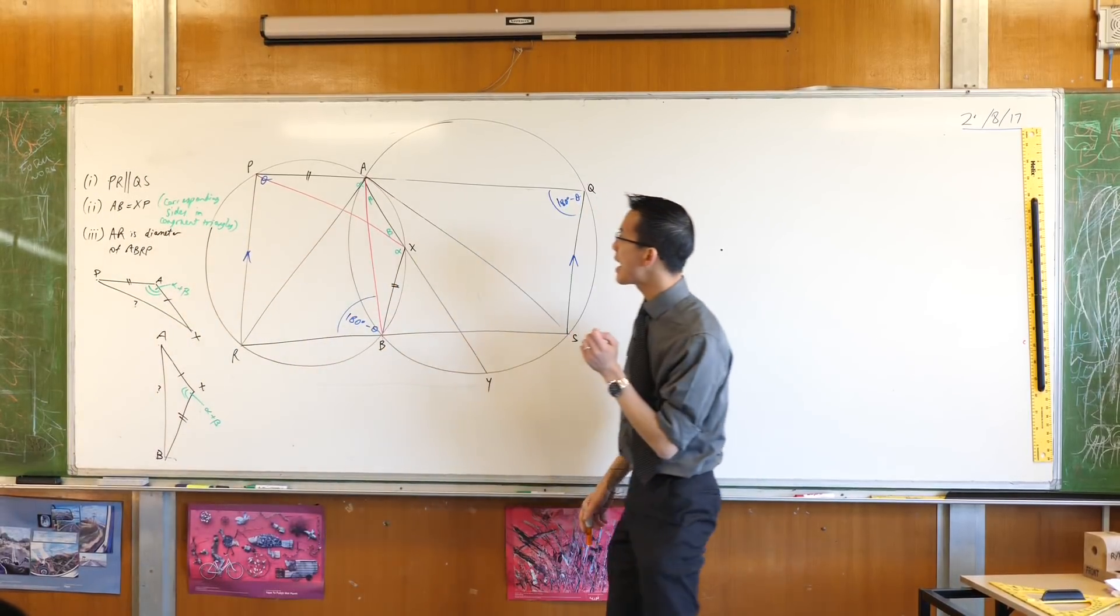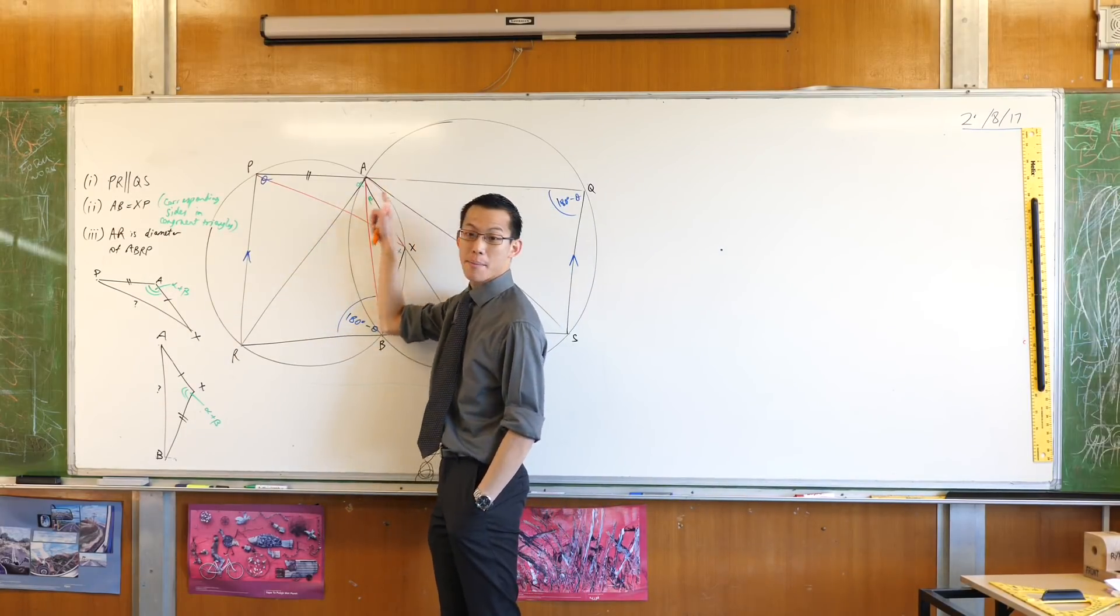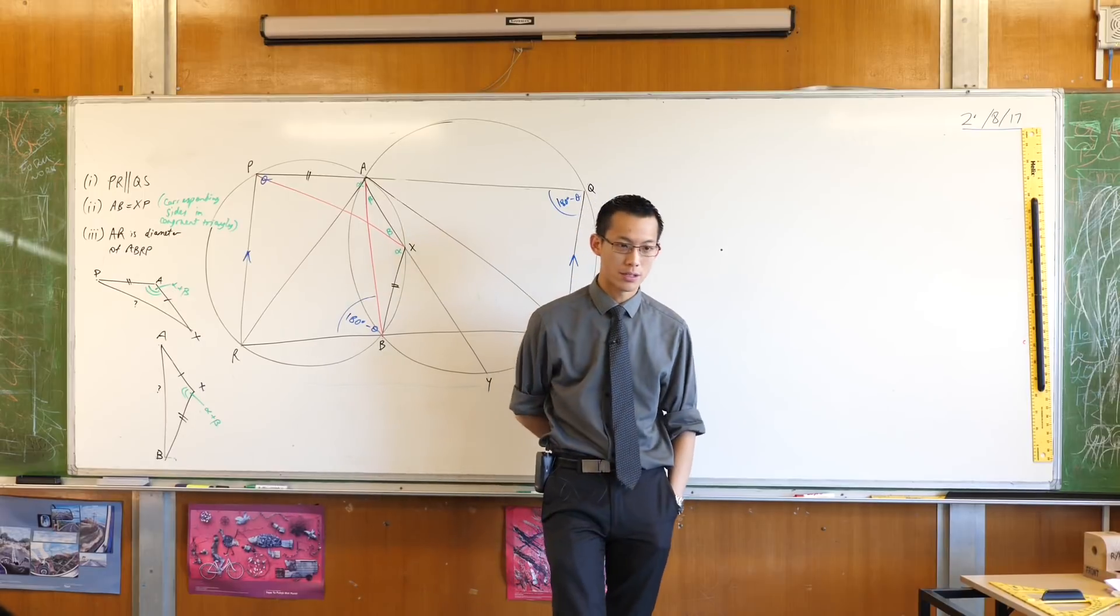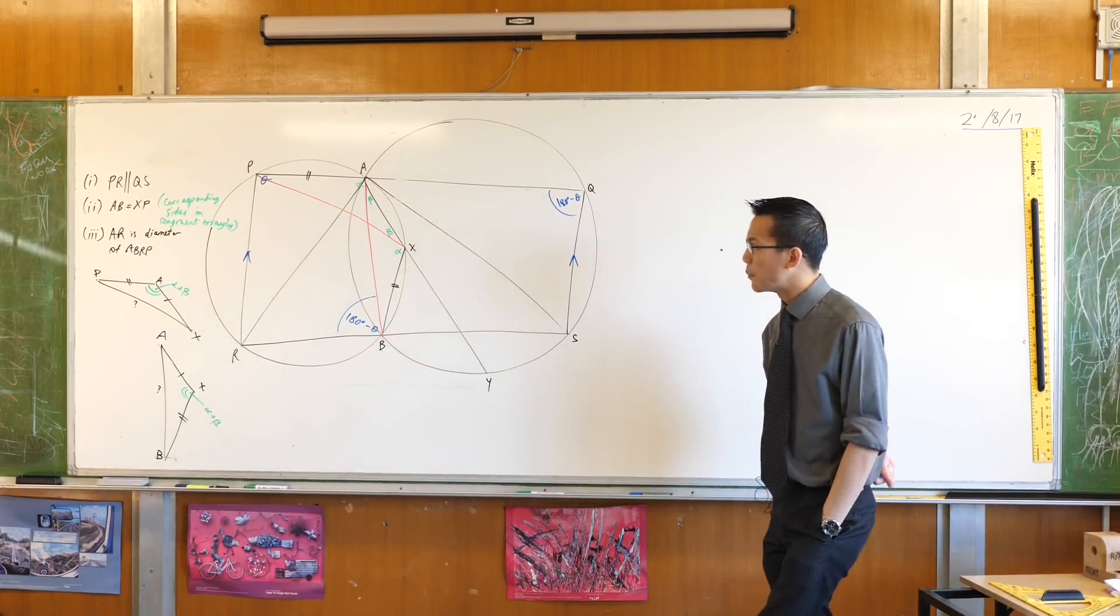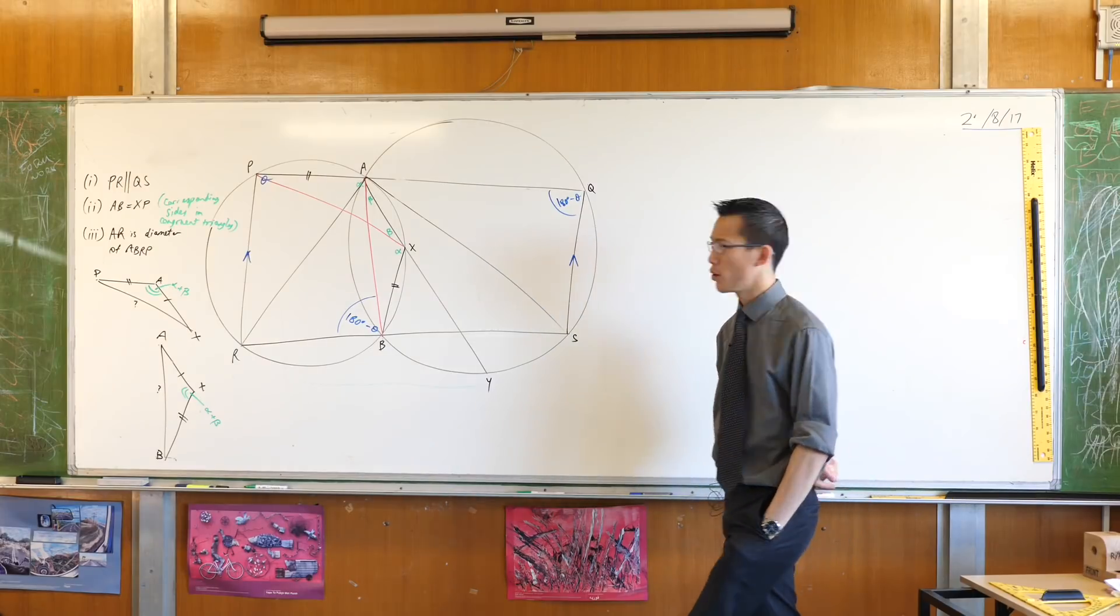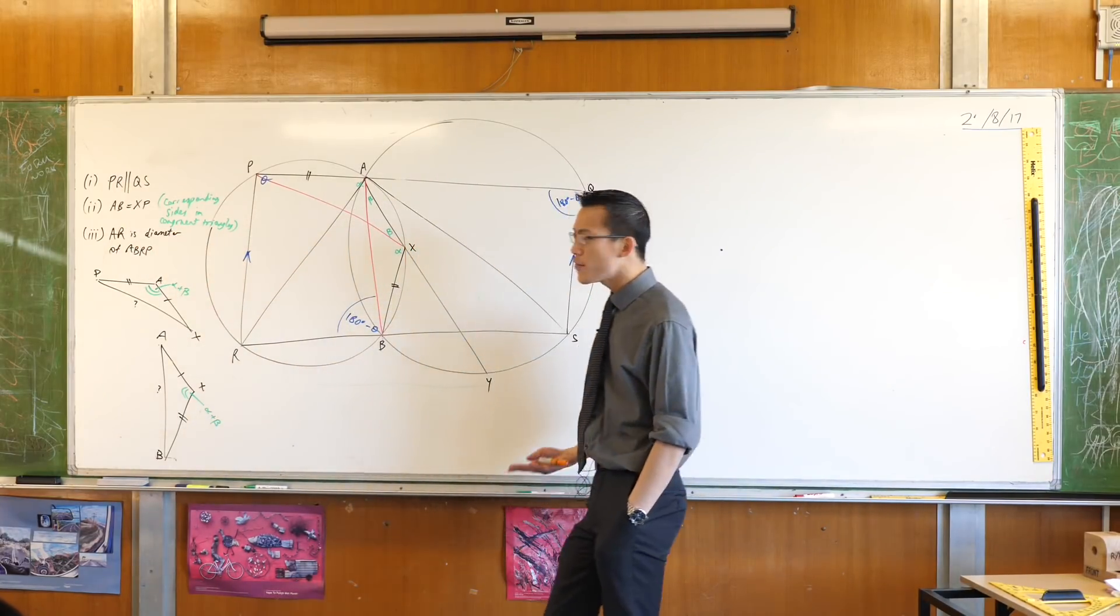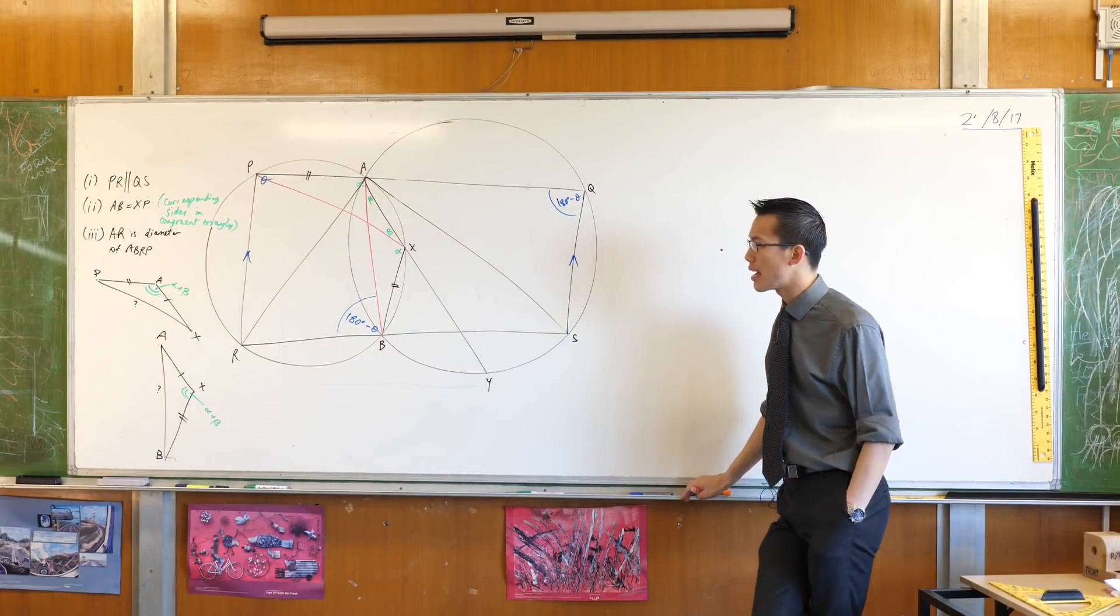It has to do with AR. AR. We want this to be a diameter. We want to prove that it's a diameter of that circle. Okay. Now, one of the things that makes this challenging is we don't often prove something like that. We prove that things are equal all the time. We're very, very good at it. How do you even go about proving that something is a diameter?